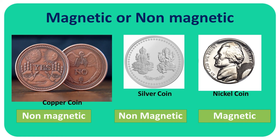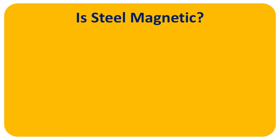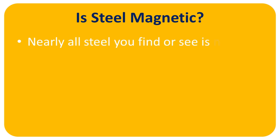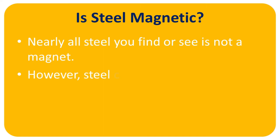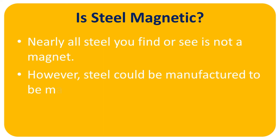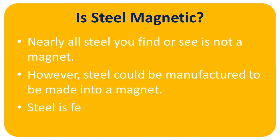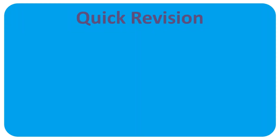Now the most curious question: is steel a magnetic material or not? Nearly all the steel you find or see is not a magnet. However, steel could be manufactured to be made into a magnet. That is why steel is known as a ferromagnetic material.